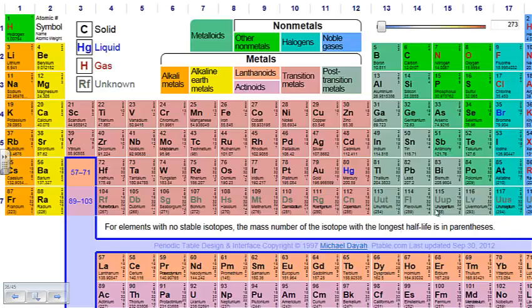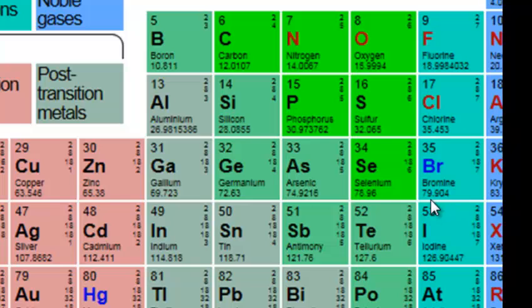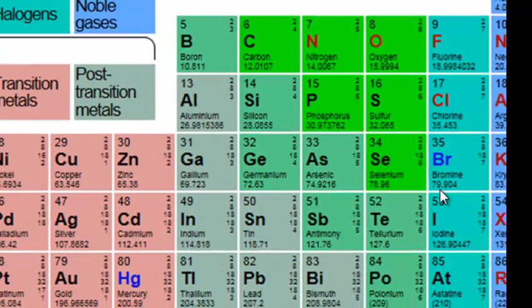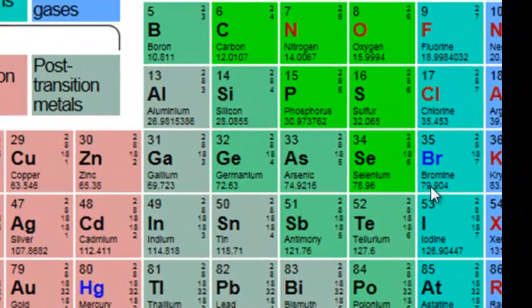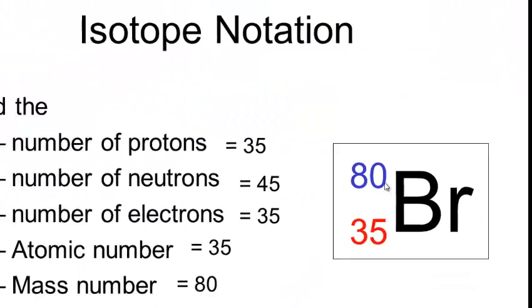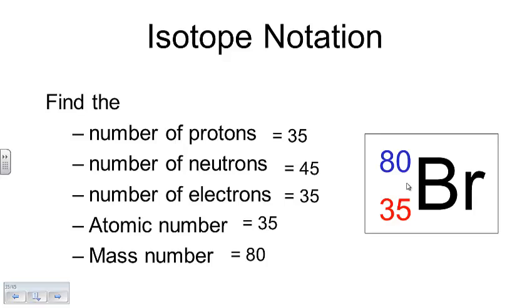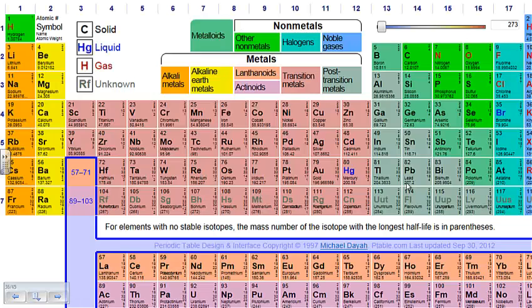If we look at the periodic table and find bromine, the average atomic mass is 79.904. What that means is there must be some types of bromine with fewer than 45 neutrons, giving a mass number below 80. That average below 80 gives us an indication that there are other forms of bromine out there with fewer neutrons.